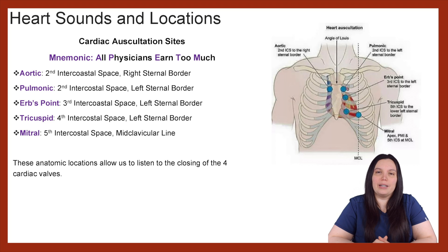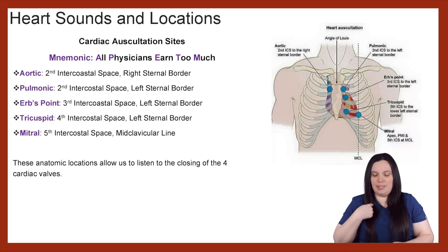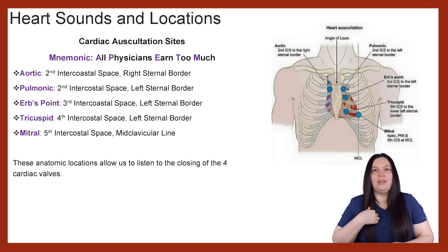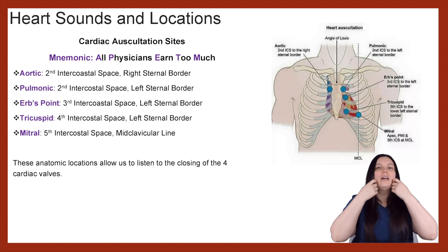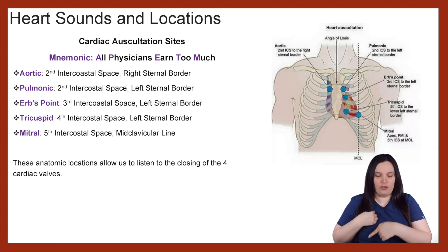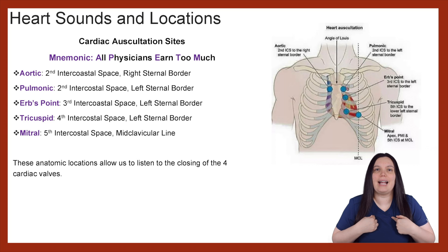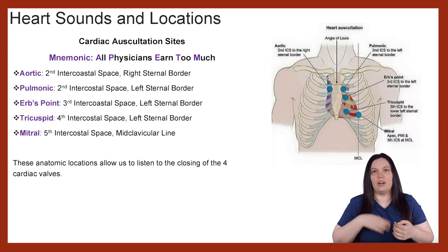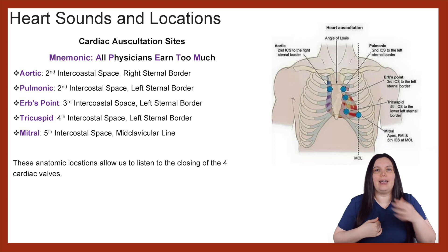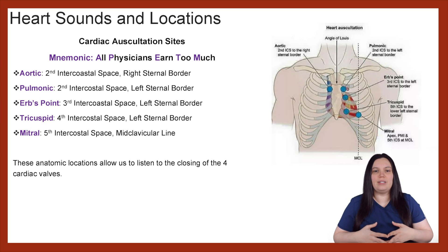When it comes to our aortic auscultation site, it's going to be located at the second intercostal space on the right sternal border. The pulmonic valve site is just across — at the second intercostal space, left sternal border. So we've got aortic on the right and pulmonic on the left. Next, Erb's point is at the third intercostal space, left sternal border.